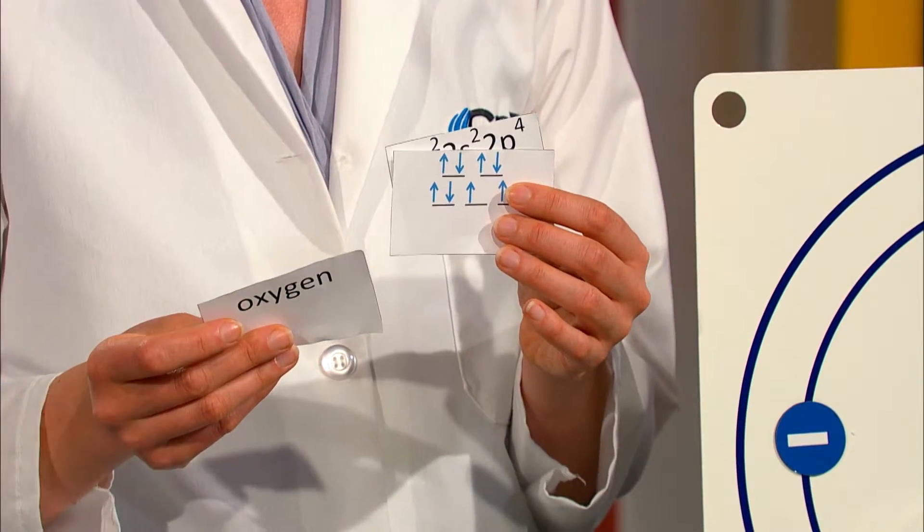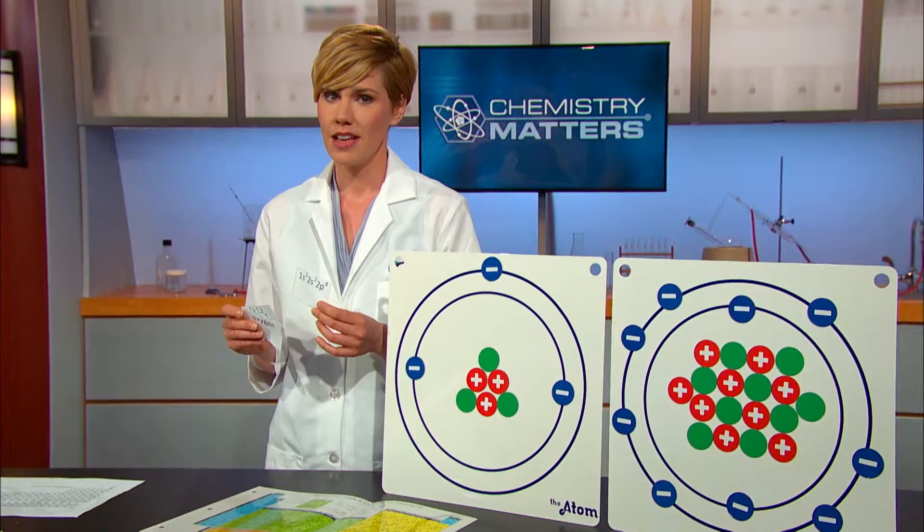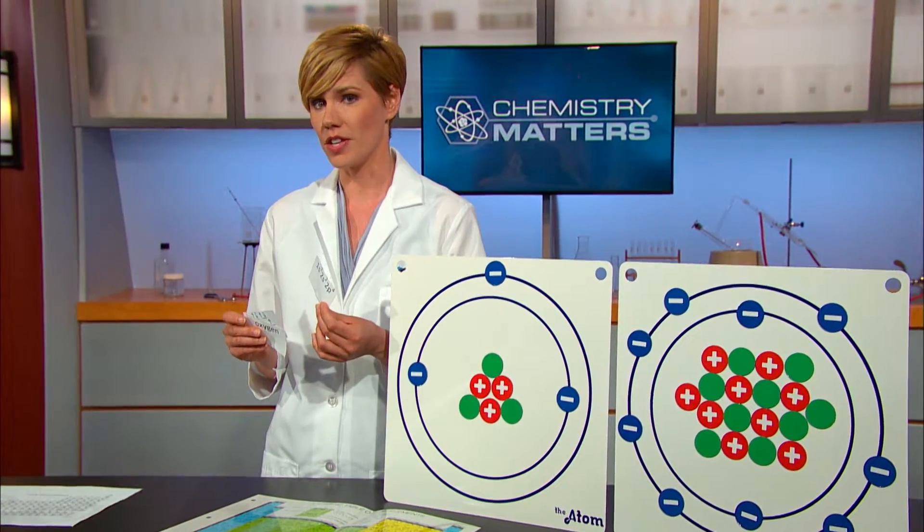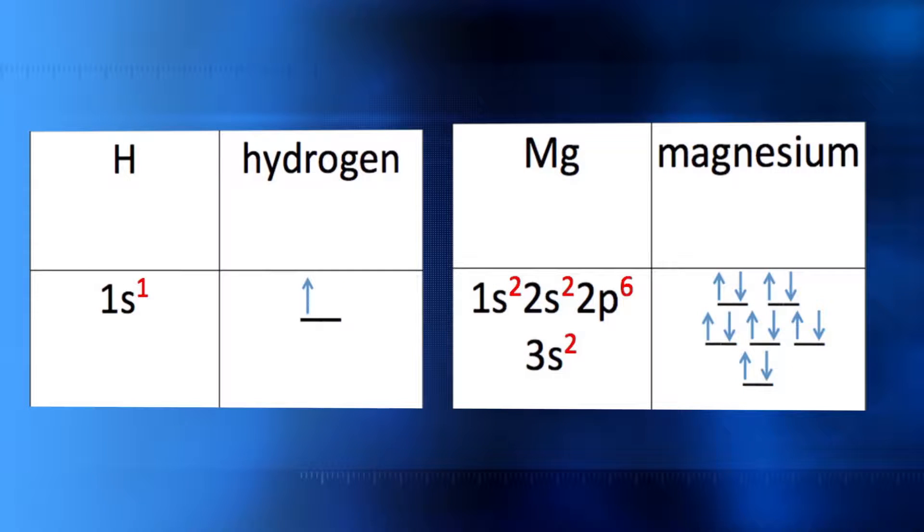The electron configuration cards are different from the element cards you used earlier in this unit. You'll see that some of the electron configuration cards have information that you're familiar with, like element names and symbols. Some cards have new information.